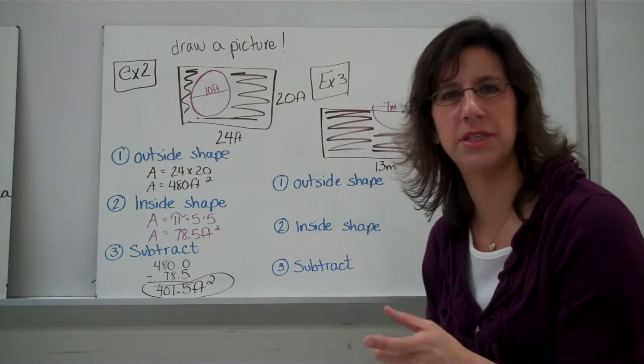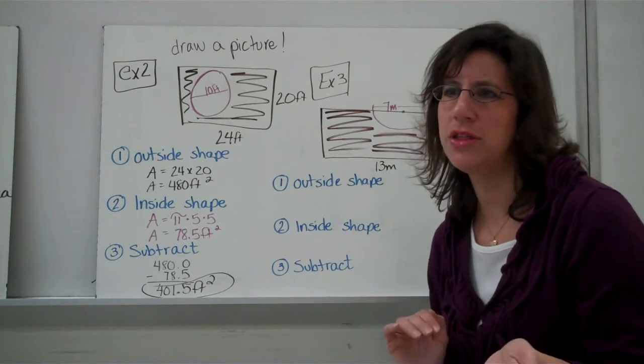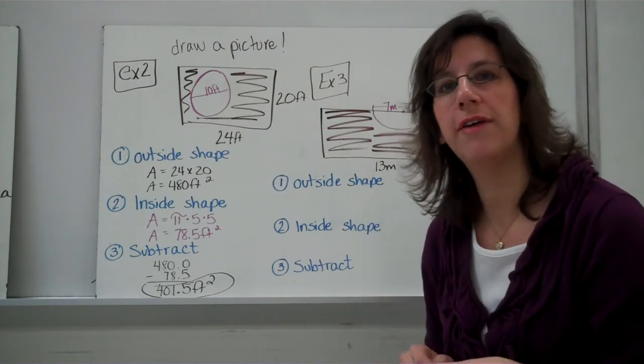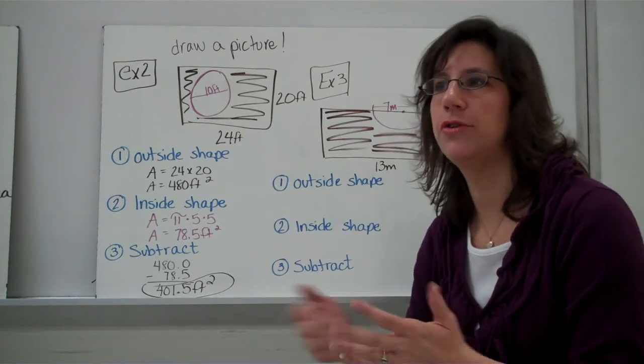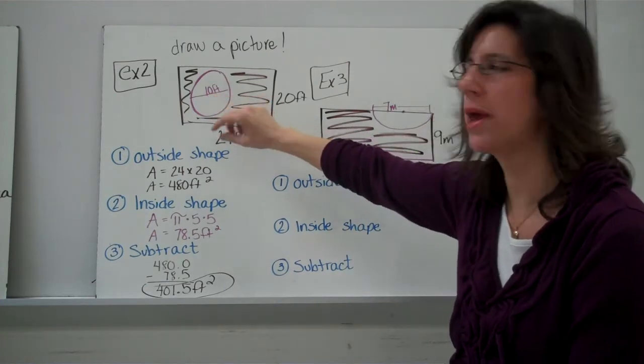And usually when they describe a 10-foot pool, or any kind of pool, they're describing the diameter. They may or may not put that in the word problem for you to know, but know that from here on forward. If you have a 15-foot pool, it's the diameter that's 15 feet. Alright. Here we have a 10-foot pool, placed inside of our yard.